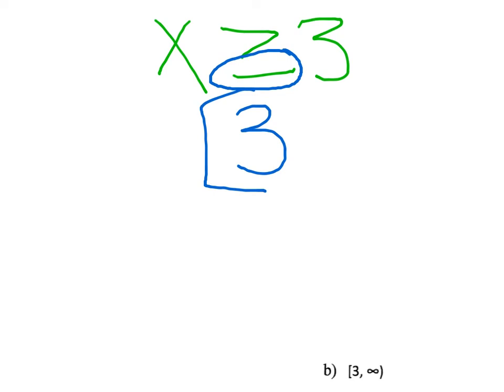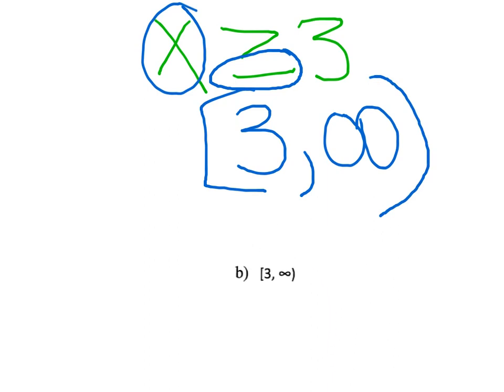Once we have looked at that, our next thing to look at is our x. Our x is greater than or equal to three, so we know that x is going to go off into positive infinity. Since we have positive infinity, we also know that it is going to need a parenthesis. This answer should match letter B. Thank you.